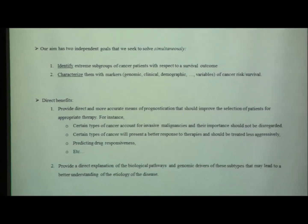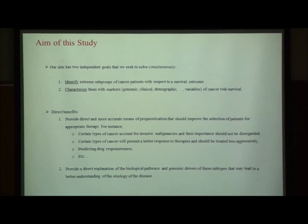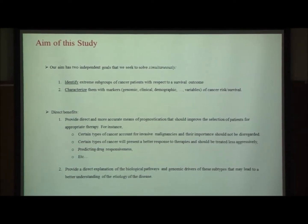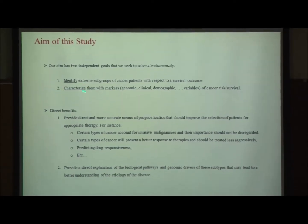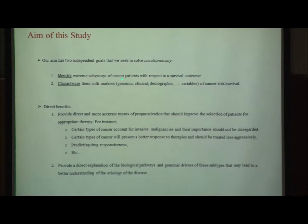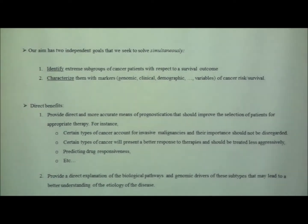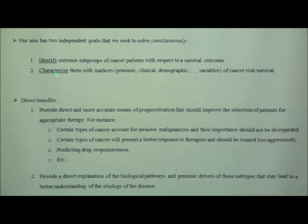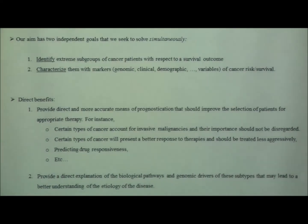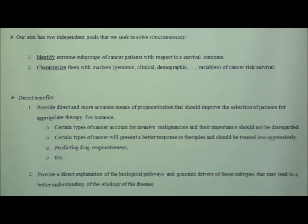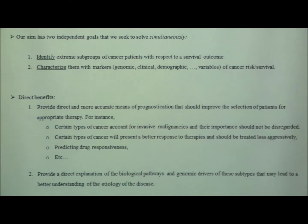The study is two-fold, with two facets done simultaneously. First, to identify extreme subgroups of patients — in this case cancer patients — with respect to a survival outcome. We're going to talk about survival bump hunting today. Second, we want to characterize them with markers. Not only do we want to distinguish these two populations, but we want to characterize them. The direct benefits are in therapy and also in understanding the biology — if we can characterize them, we can identify mutations, copy numbers, and pathways that are affected.